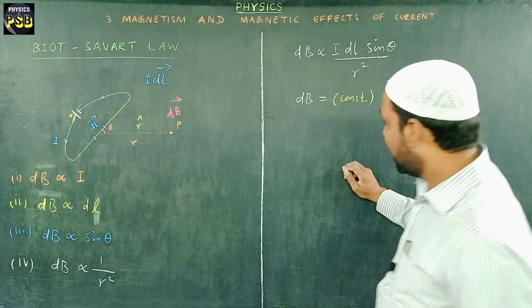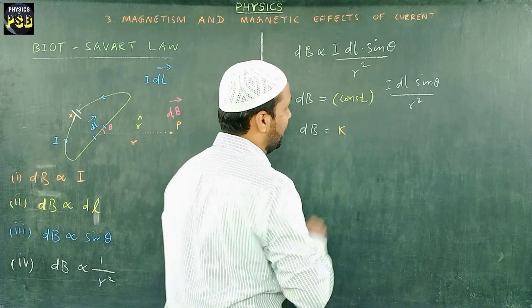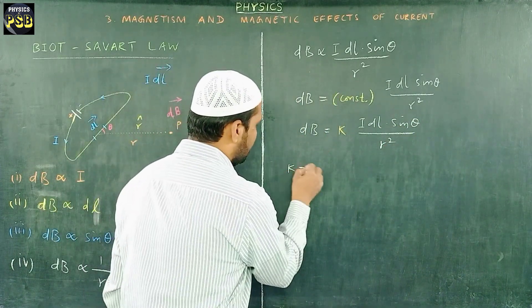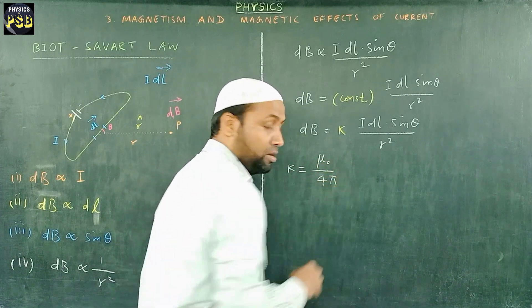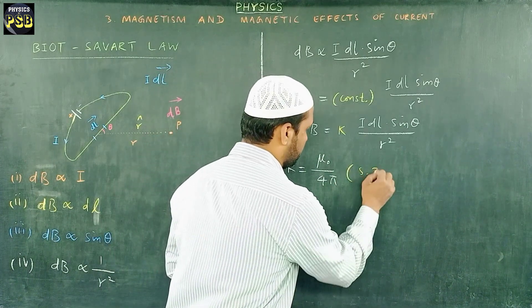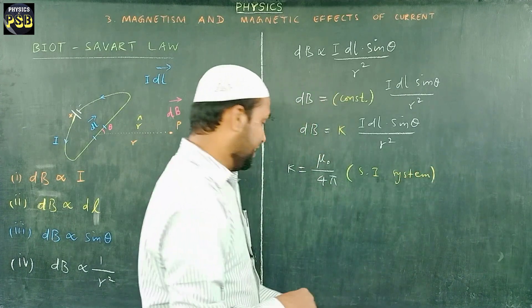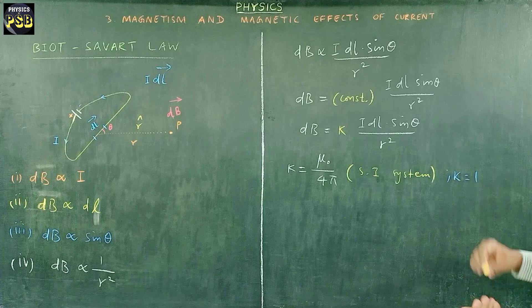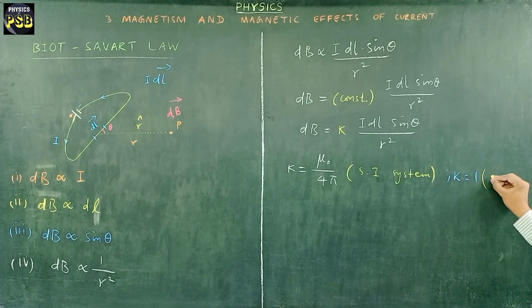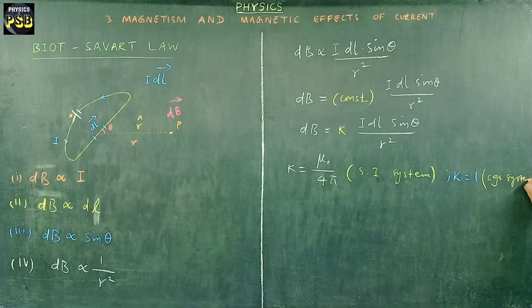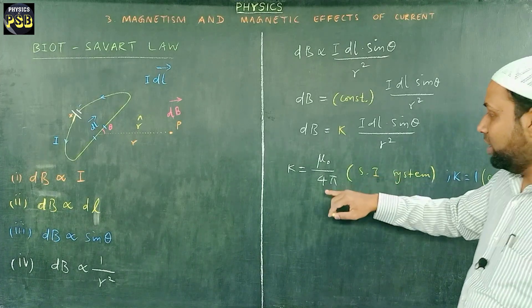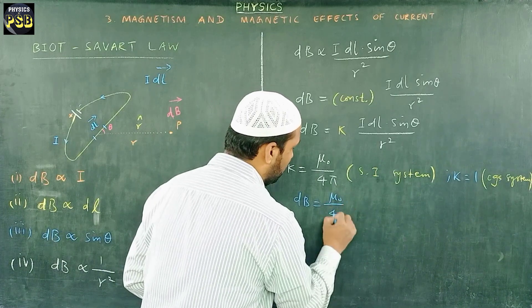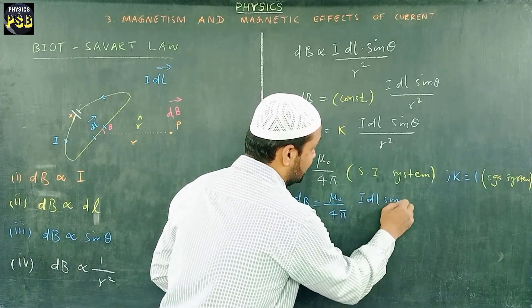I name this constant as k. What is k here? k is nothing but μ₀ upon 4π in SI system, whereas in case of CGS system k is taken as one. CGS stands for centimeter gram and second system, but worldwide we follow SI system. So in the place of k I write this. The expression becomes dB equals μ₀ upon 4π times I dl sine theta upon r square.